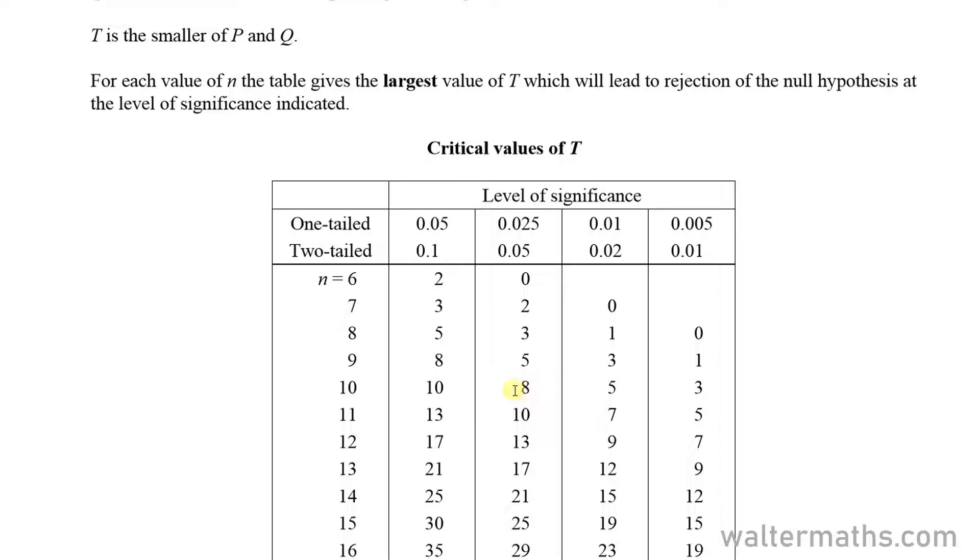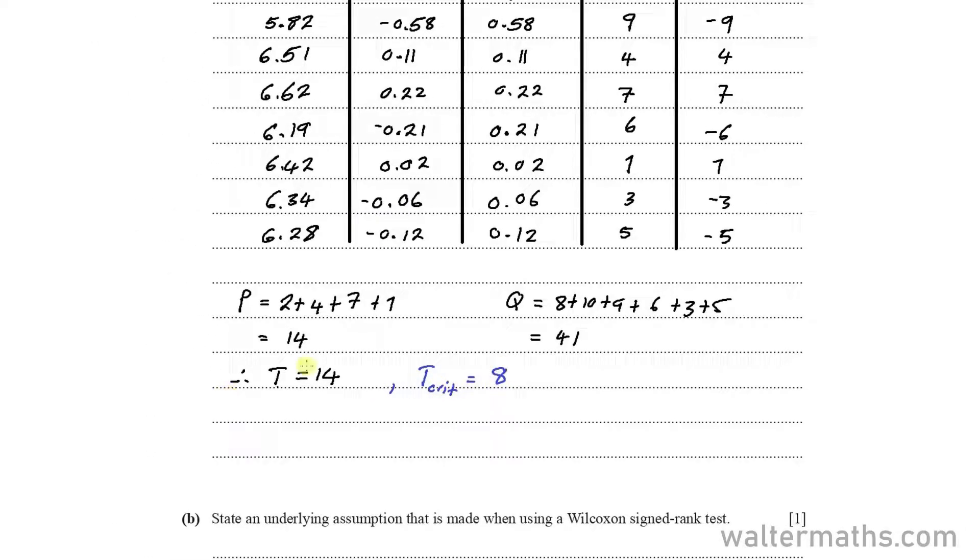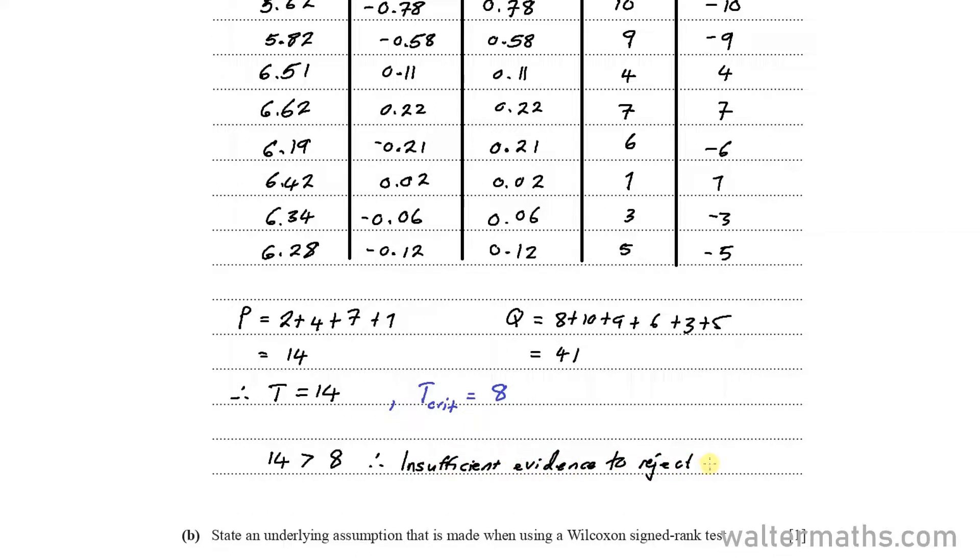Okay, so what does that mean? It means that if the test statistic is less than 8, then it lies in the rejection region, and so we can reject the null hypothesis. But if the test statistic is greater than 8, then it lies in the acceptance region, where there's insufficient evidence to reject the null hypothesis. So let's go back to the question. The critical value came out as 8. And we can notice that 14 is greater than the critical value 8, which therefore means that there is insufficient evidence to reject the null hypothesis, which is the claim.